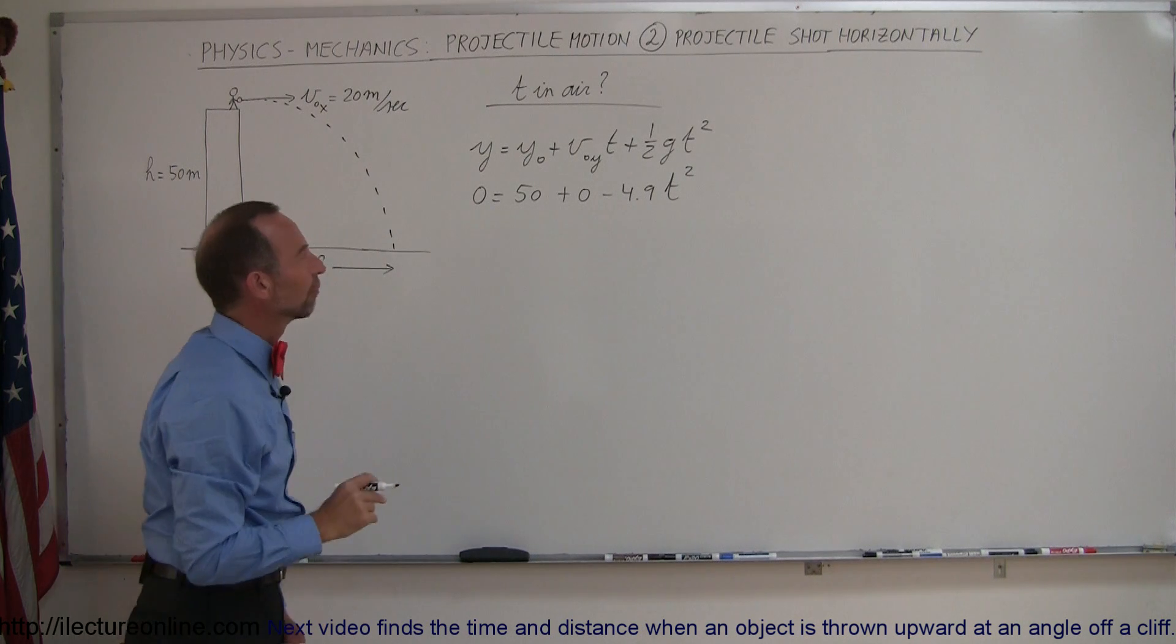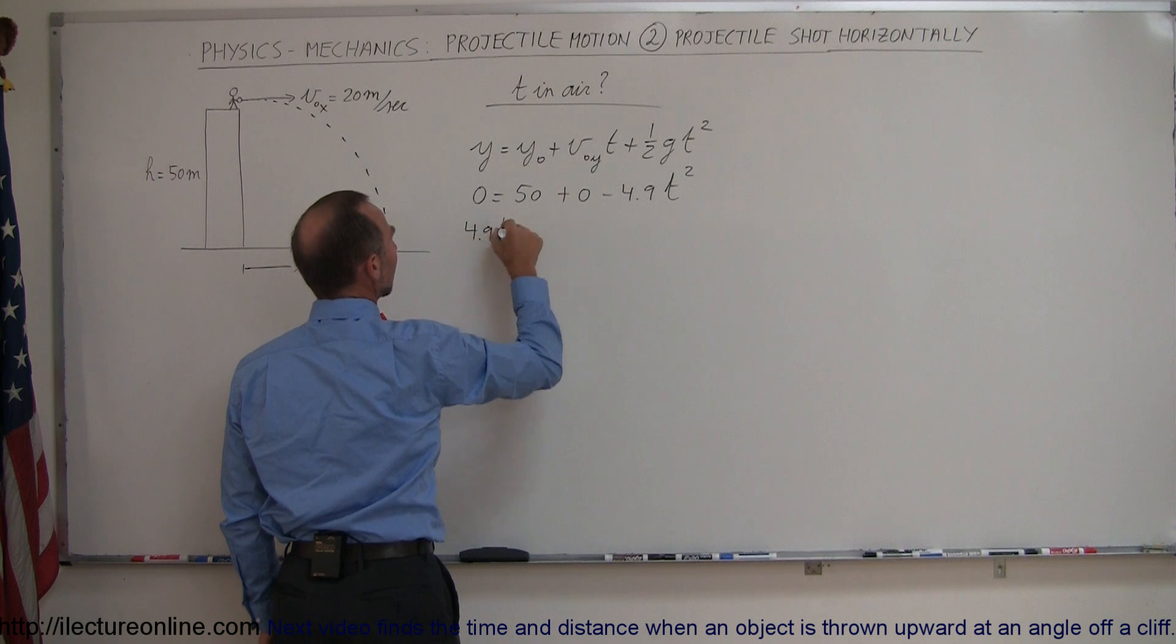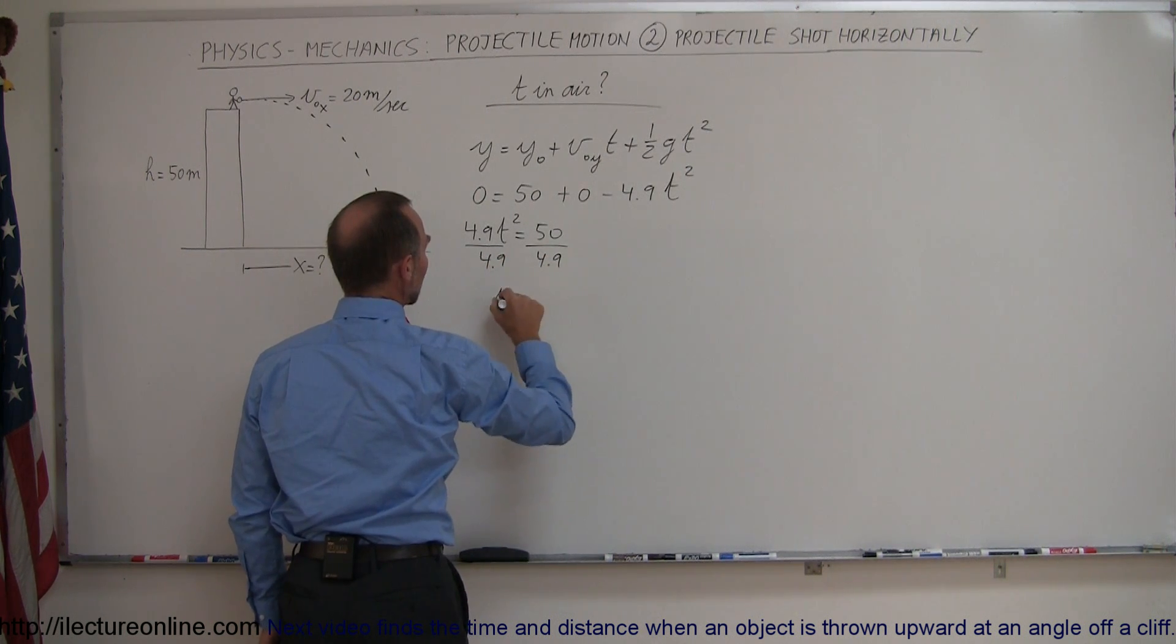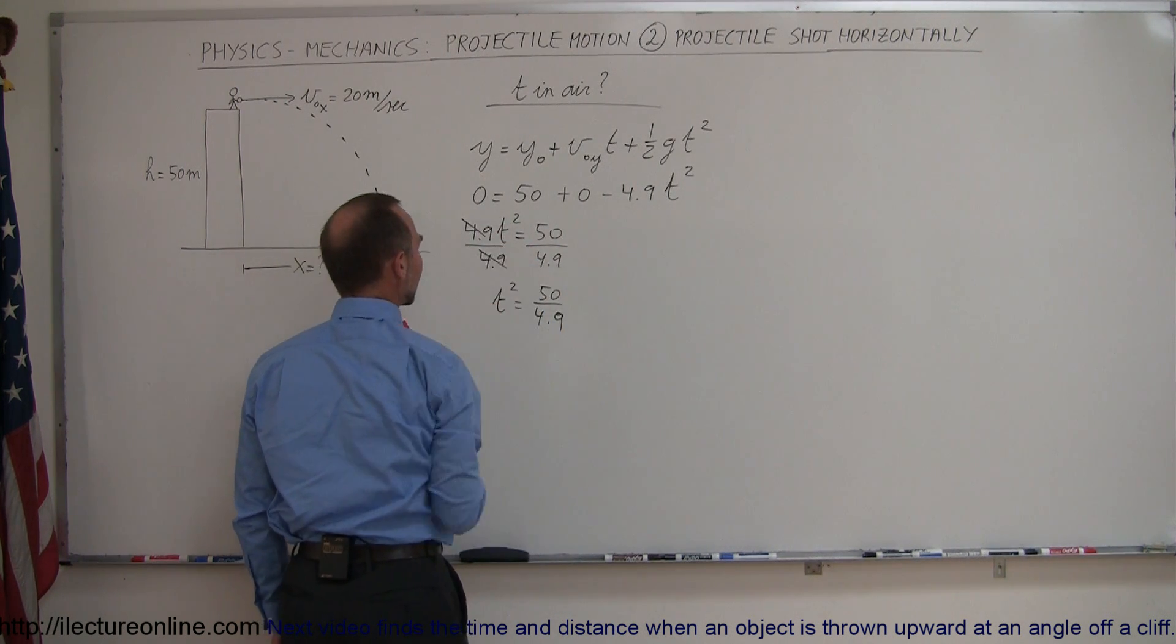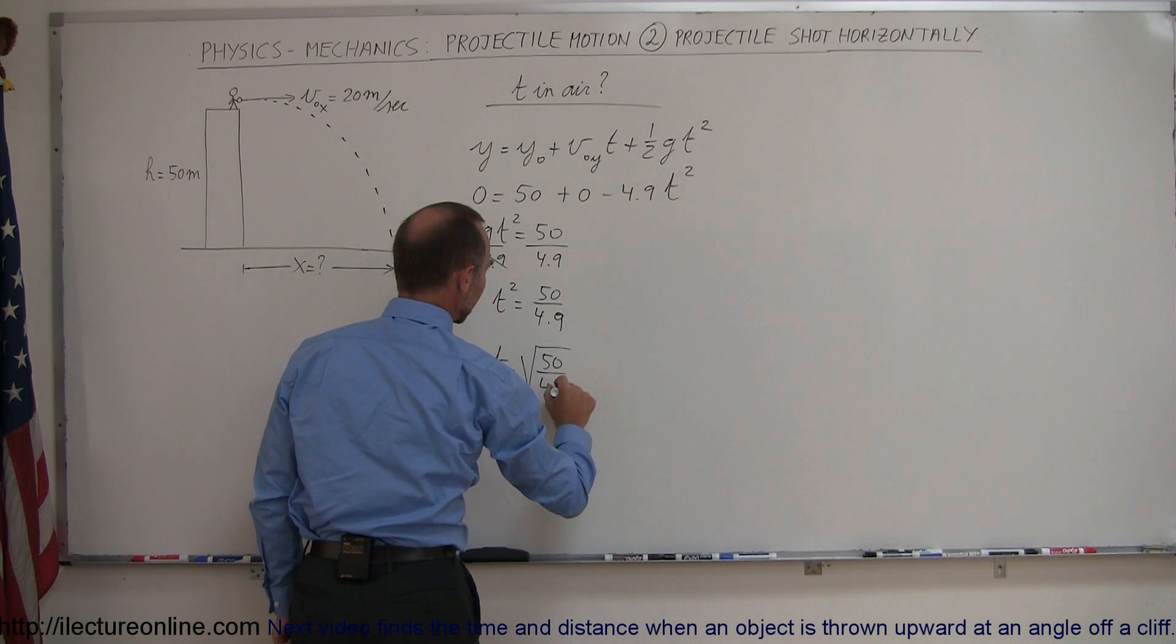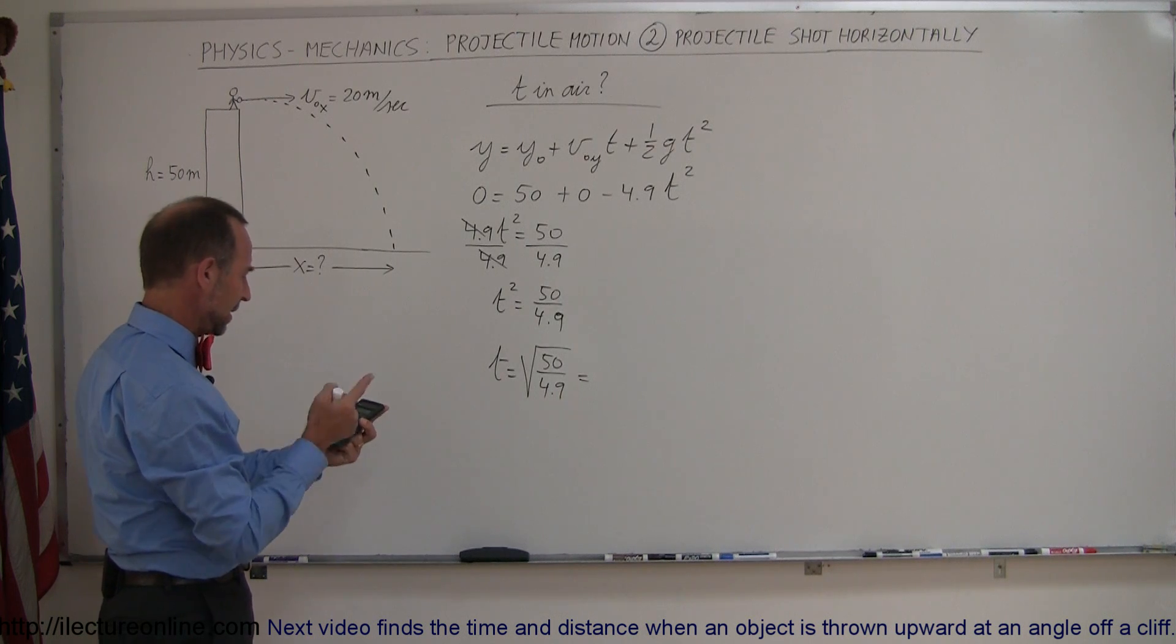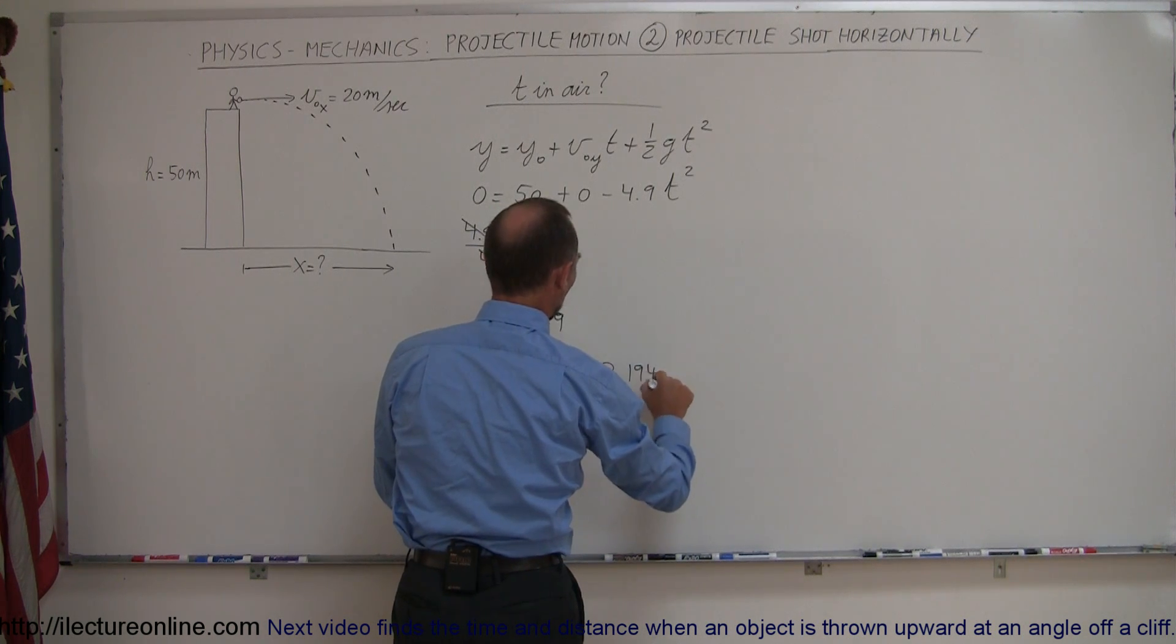And we solve this equation for time. Notice if I move this term to the other side, it becomes positive. So 4.9 t squared equals 50. Divide both sides by 4.9, and we get t squared equals 50 divided by 4.9, because here the 4.9s cancel out. And then we take the square root. And we get 50 divided by 4.9. I need my calculator for that. 50 divided by 4.9, and then we take the square root, and it looks like it is 3.194 seconds.